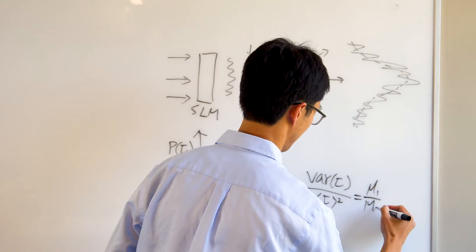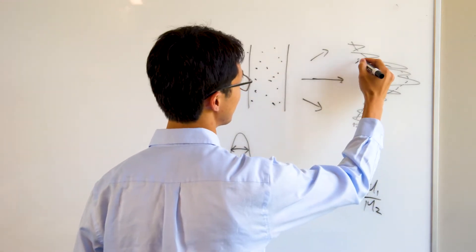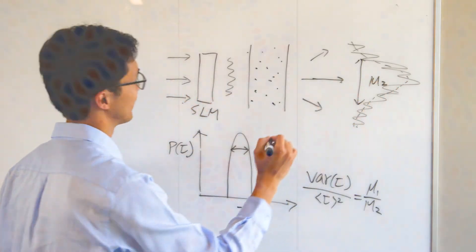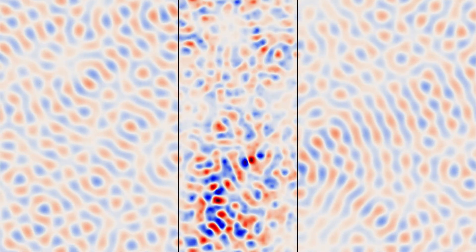When light propagates through a complex medium, it gets scattered multiple times, and the information appears to be lost. We try to unscramble that process and retrieve the lost information. This can enable imaging techniques to see deeper and, for example, allow doctors to make better diagnostics.